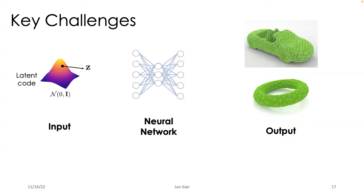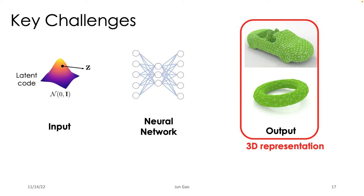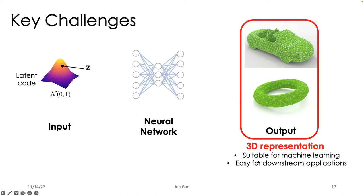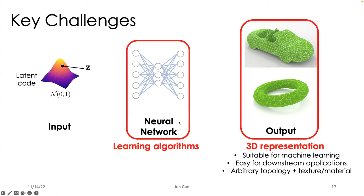Looking into this pipeline, there are several challenges. The first challenge is 3D representation — it affects how we design the neural network architecture and how we utilize it in downstream applications. A proper 3D representation should be suitable for machine learning, easy to use in downstream applications, and ideally able to represent objects with arbitrary topology while supporting textures and materials. The second challenge is learning algorithms — involving not just network architecture design but also how we train the network. I will talk about our efforts to solve these challenges and build a 3D generative model.